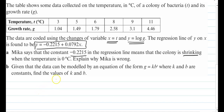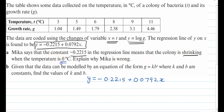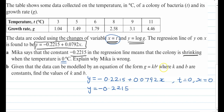Our equation is y = −0.2215 + 0.0792x. Mika says the constant means the colony is shrinking when temperature is 0 degrees centigrade, i.e., when T = 0, then x = 0, because x = T. If we put x = 0, then y = −0.2215. And y is log G, so we can write log G = −0.2215.